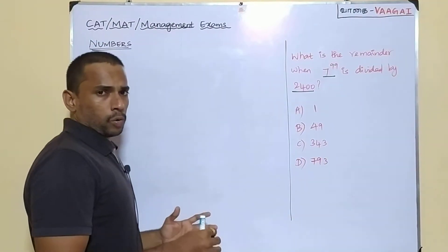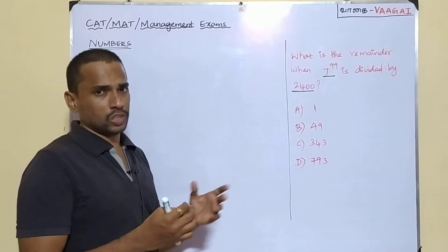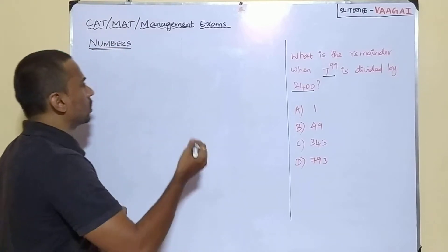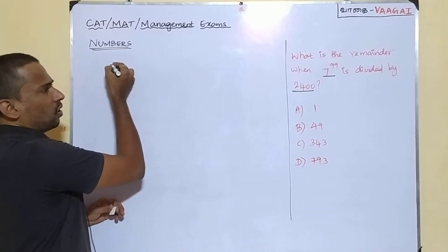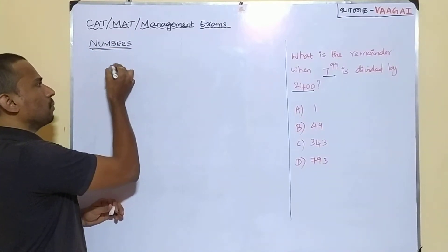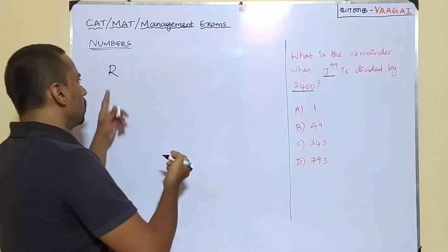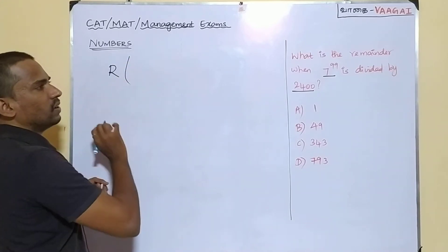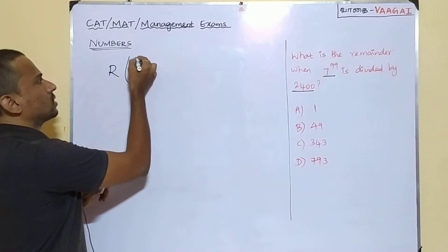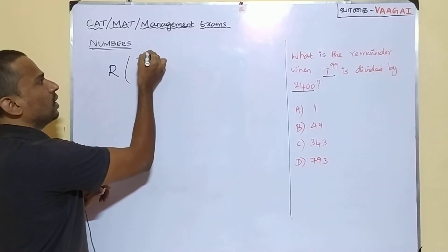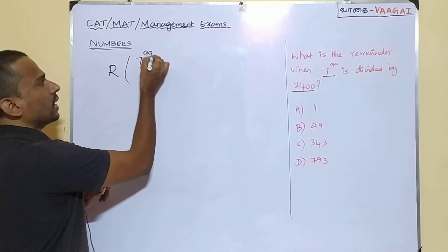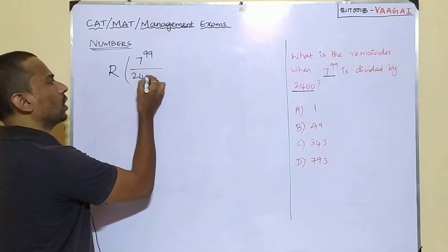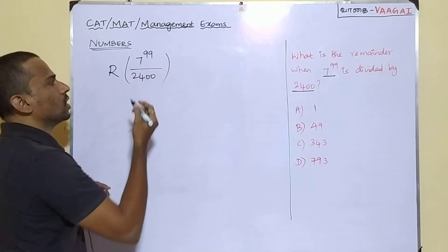Anyway, let's see the approach — how we can solve this problem. So the question is asking: what is the remainder? This is how we usually represent remainder. Remainder when 7 power 99 is divided by 2400.